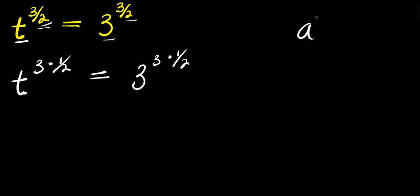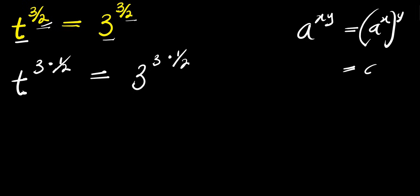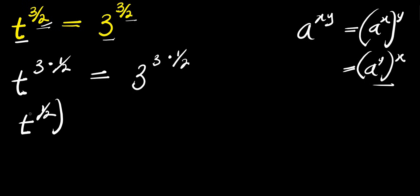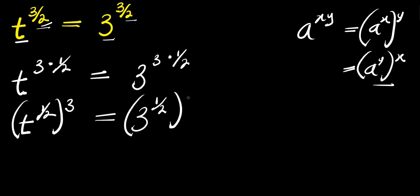Now if you have a to the power of x times y, this equals a to the power of x, raised to the power of y. We apply this identity, which means we have t to the power of one over two, raised to the power of three, equals three to the power of one over two, raised to the power of three.